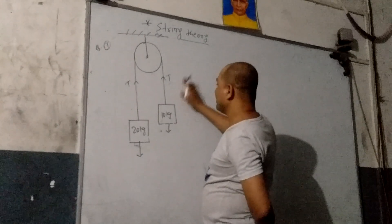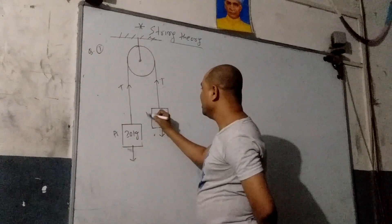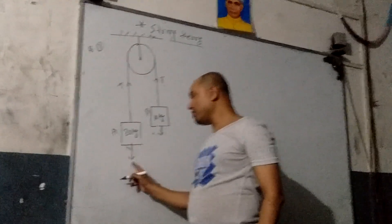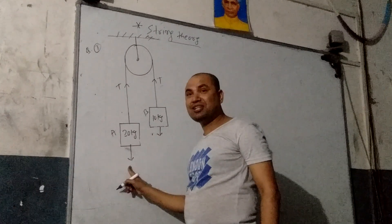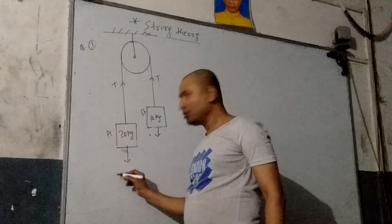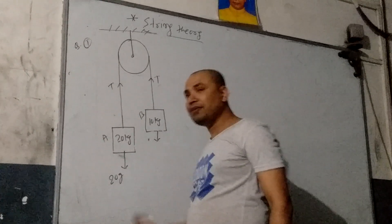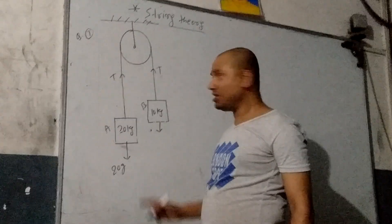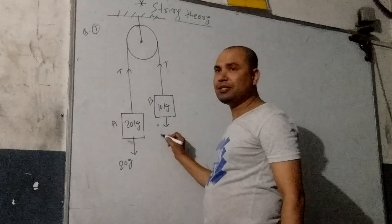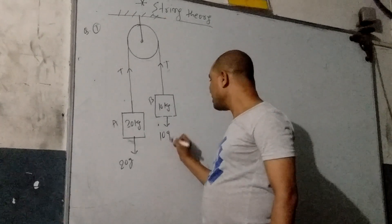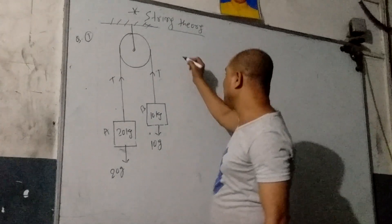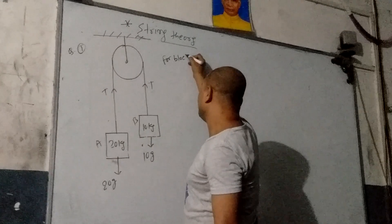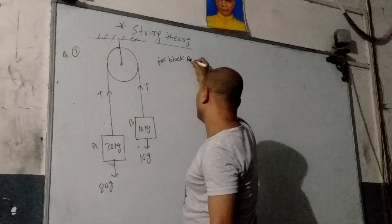We need to analyze block A and block B. Let block A be 20 kg and block B be 10 kg. The weight of the 20 kg body is 20g (Mg), and the weight of the 10 kg body is 10g (Mg). Now, for block A, we are considering the 20 kg block.